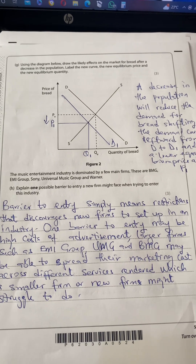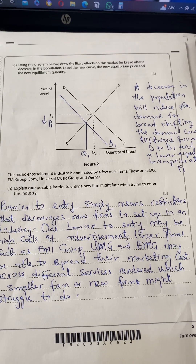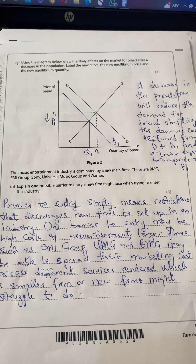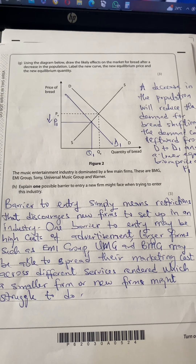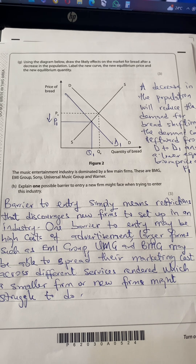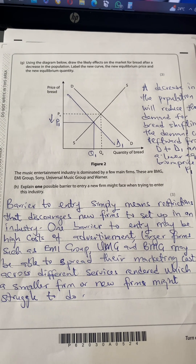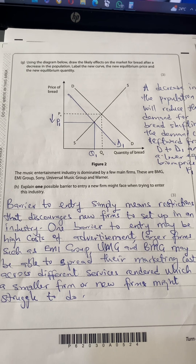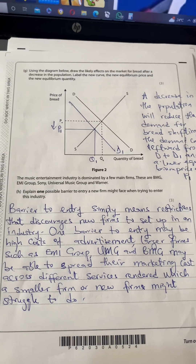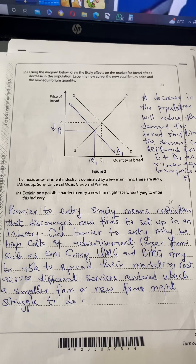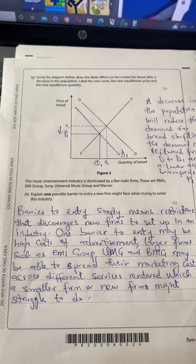Question H: explain one possible barrier to entry a new firm might face when trying to enter this industry. Barriers to entry are restrictions that discourage new firms from setting up in an industry. One barrier to entry could be the high cost of advertising. Larger firms such as EME Group, UMG, and BMG may be able to spread their marketing costs across different services, which a new firm might struggle to do.